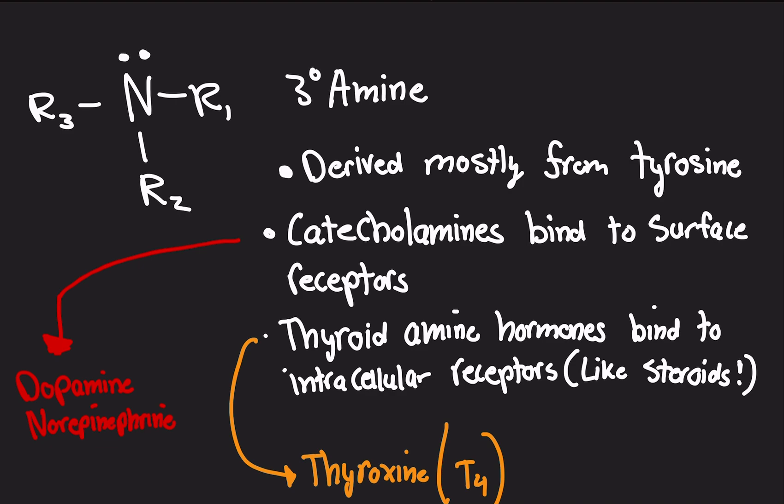Amines are the hybrids of the two. You've got catecholamines that bind to surface receptors, just like peptide hormones. And thyroid amine hormones that bind to intracellular receptors, just like steroids. They're the hybrids of the group. And all of them have the amine functional group, basically a nitrogen surrounded by atoms. One, two, or three.